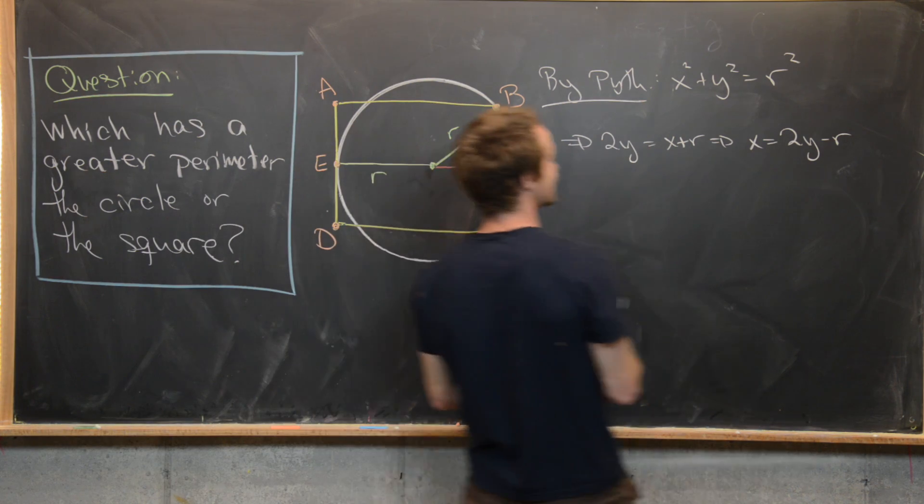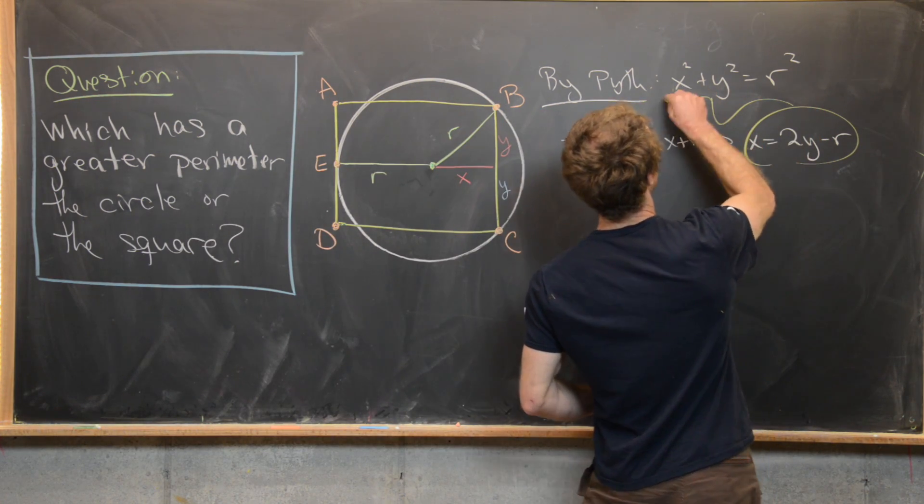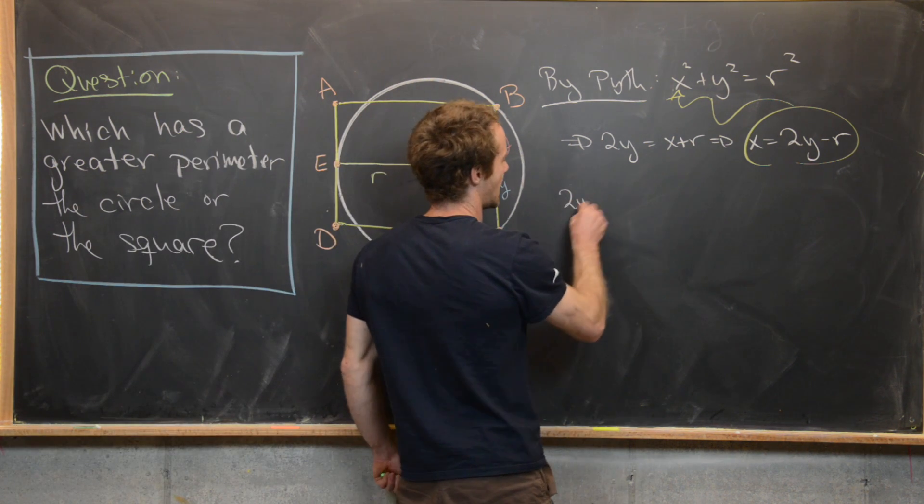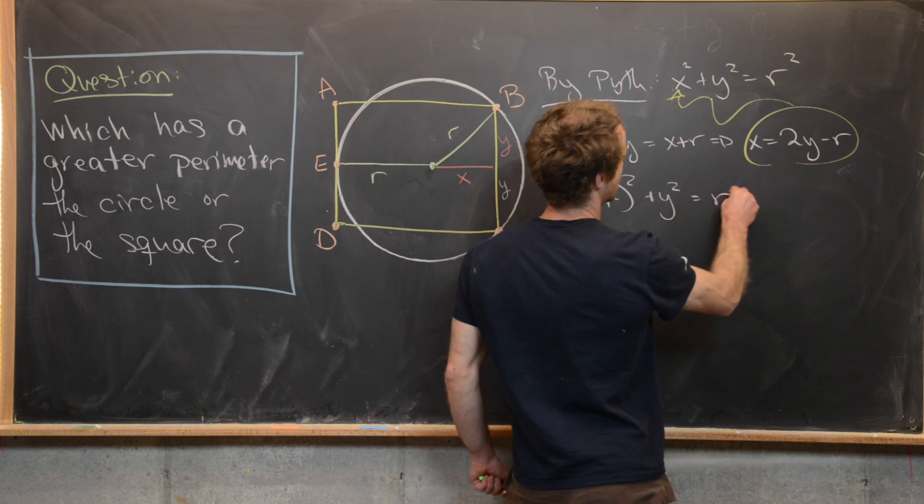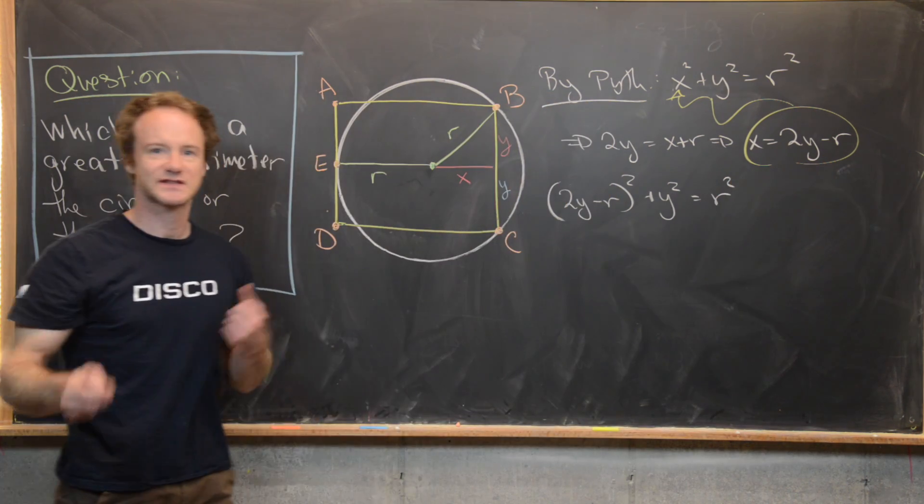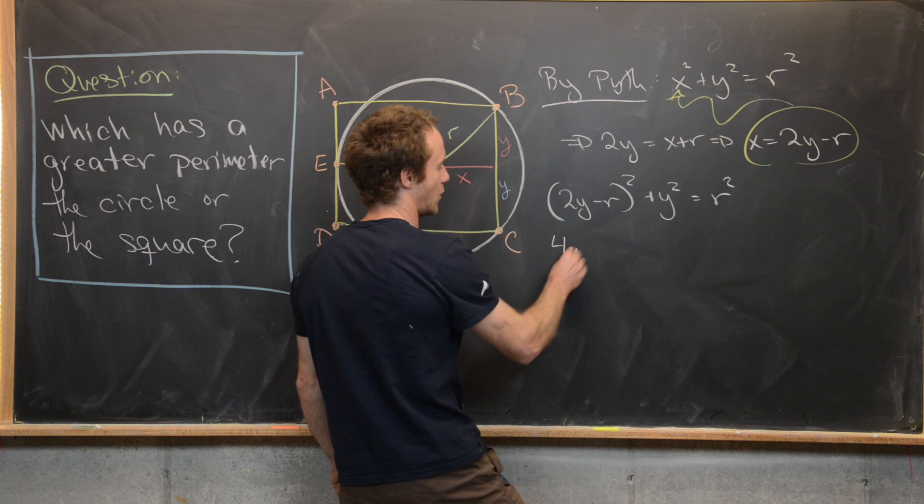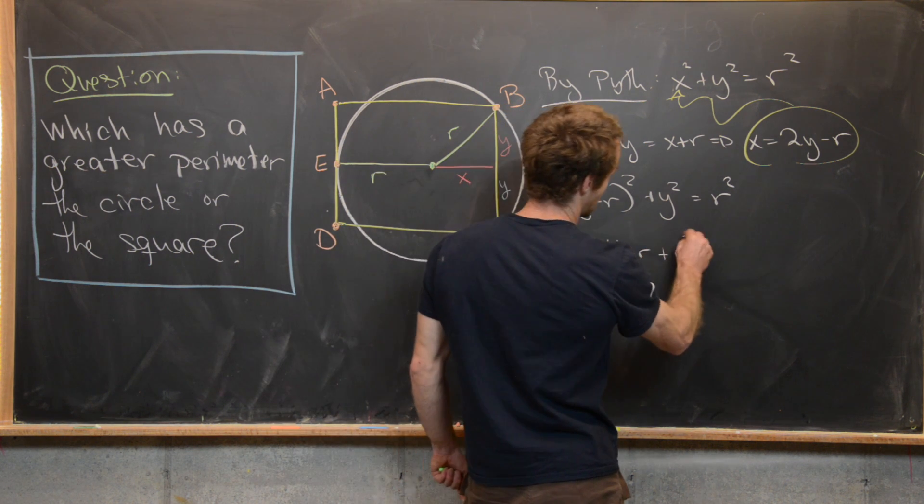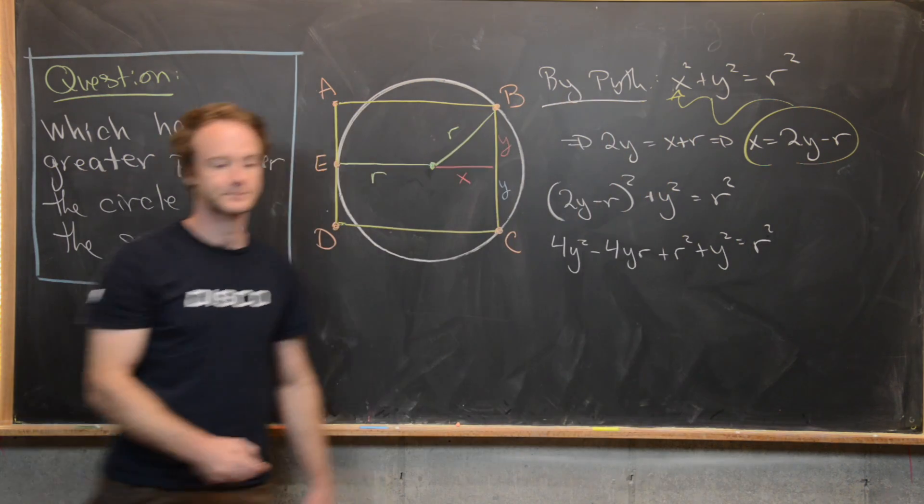So now we're going to go ahead and take this and insert it into this equation right here. We're going to have 2Y minus R quantity squared plus Y squared equals R squared. Now it's just some symbolic arithmetic. We're going to get 4Y squared minus 4YR plus R squared plus Y squared equals R squared.